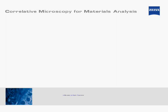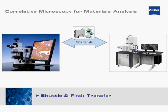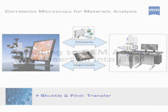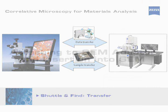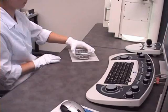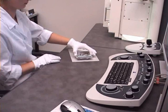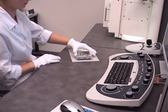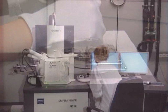The holder and image files can be transferred to any scanning electron microscope or cross-beam FIB-SEM workstation from Carl Zeiss as soon as work with the light microscope is finished. The sample holder is attached to an adapter which is compatible with all scanning electron microscope and cross-beam platforms from Carl Zeiss. The adapter with sample holder is then mounted into the vacuum chamber of the SEM or cross-beam system.